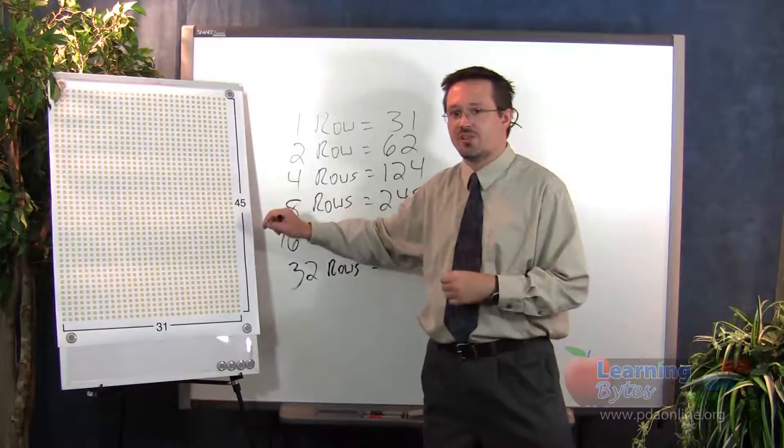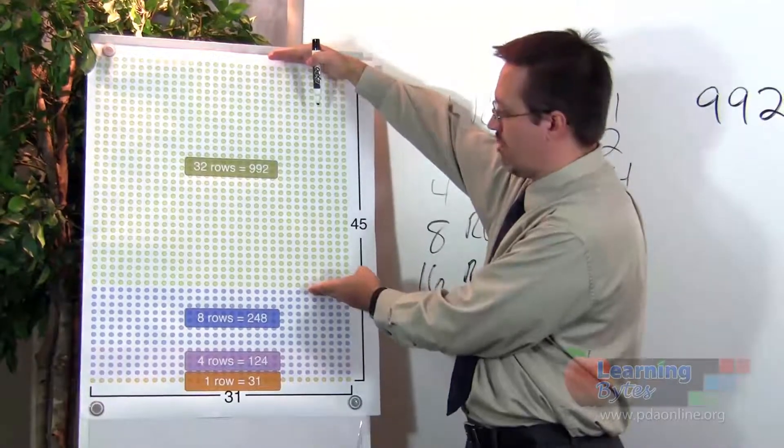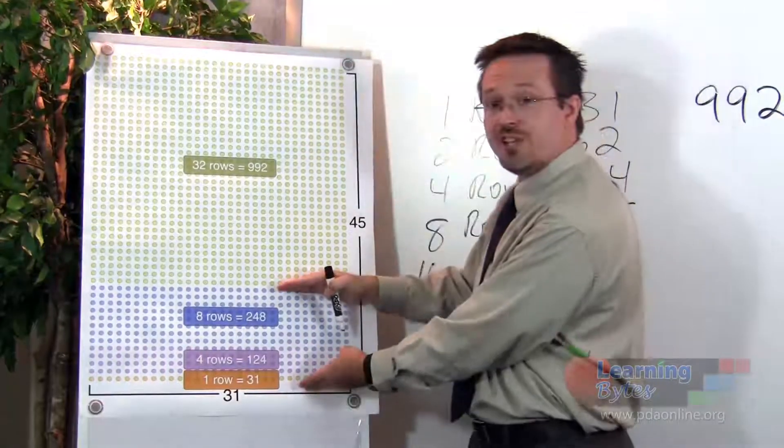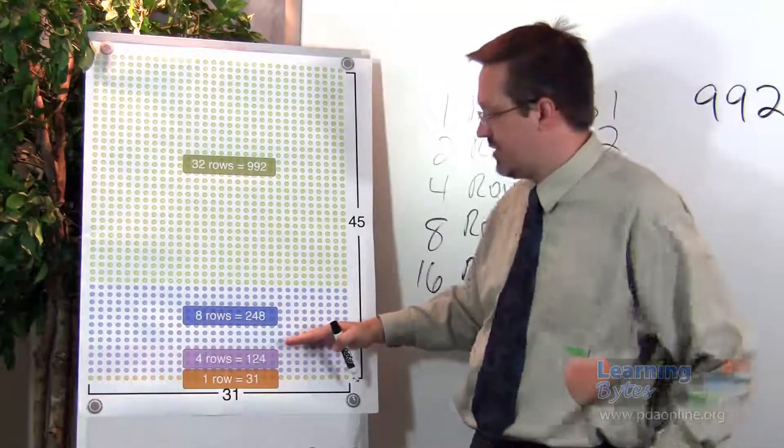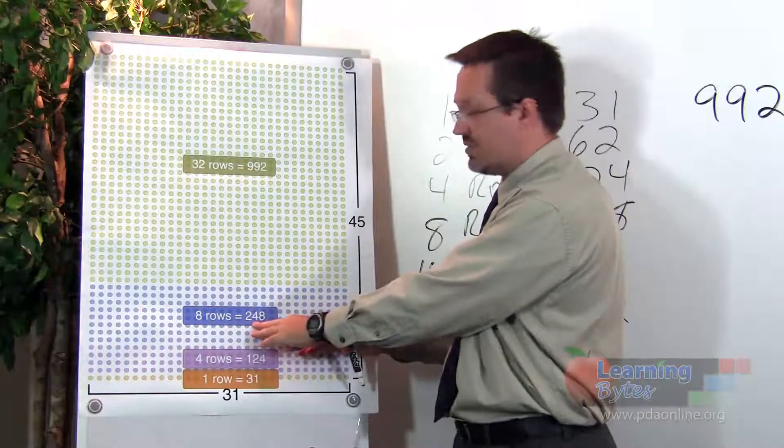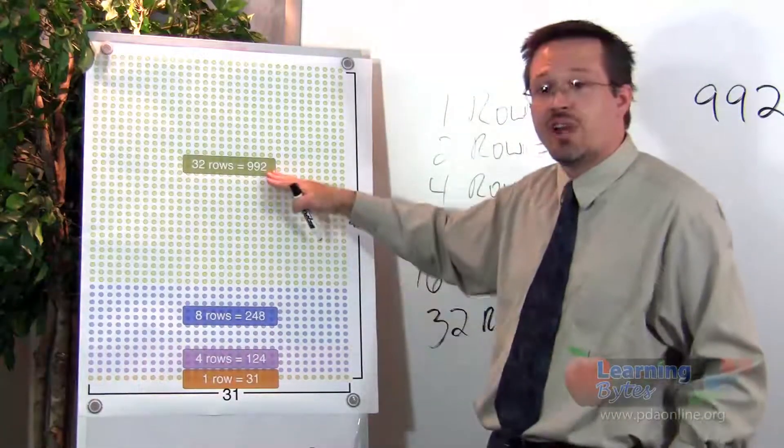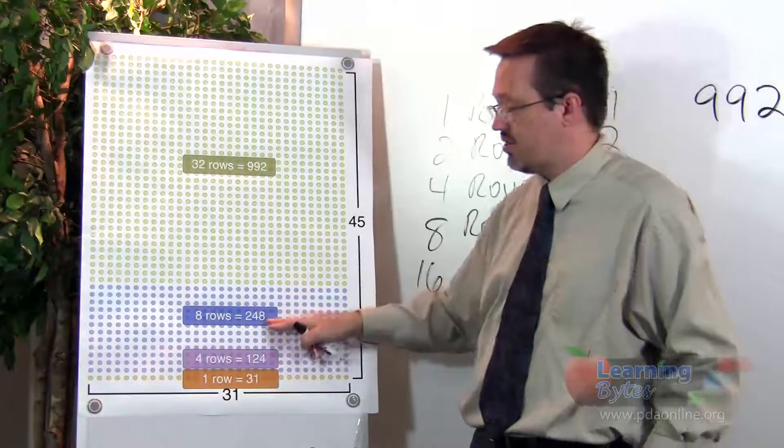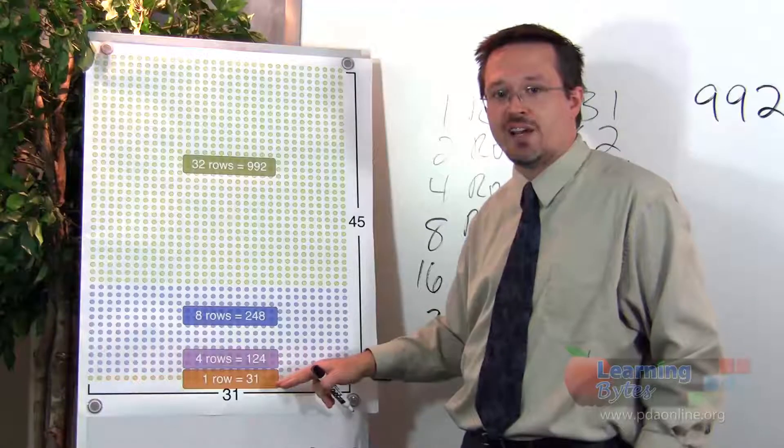Let's take a closer look. So if we take out 32 of our rows, we're left with 13 rows. Well, what if we took another 8 out of that 13? We know that 8 rows has 248 students in it. So we know that so far we have 992 students plus 248 students with another 5 rows that we've not yet accounted for.